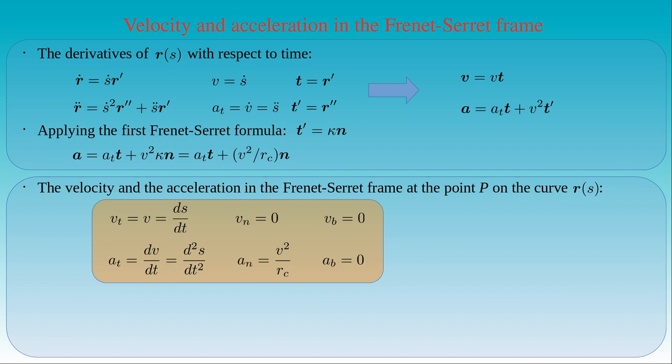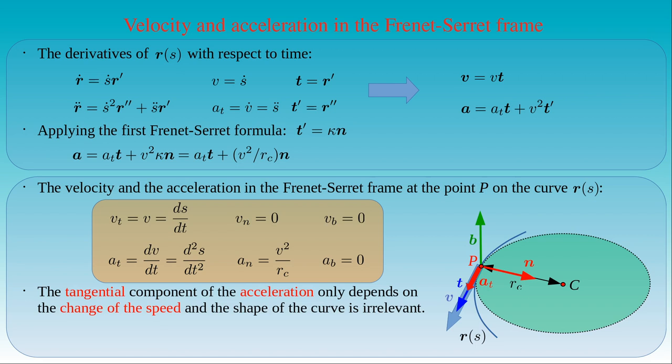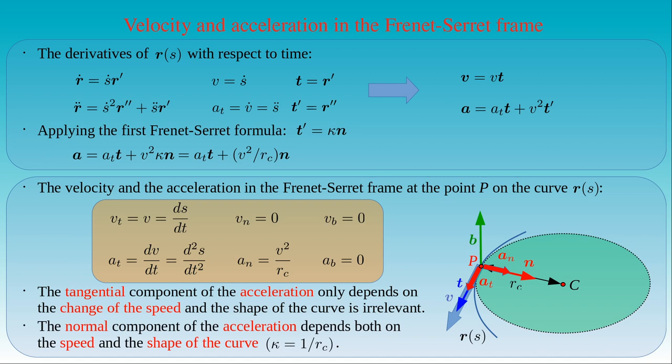In the figure we can see the curve r(s) with the Frenet-Serret frame at point P and the osculating circle with radius R_C. The velocity vector V points in the tangential direction of the curve at P. There is a tangential component of the acceleration that only depends on the change in speed, while the shape of the trajectory is irrelevant. However, the acceleration also has a normal component, which depends on both the speed of the body and the shape of the curve representing its path. This means that if a body moves along a curved path, its acceleration vector will not vanish even if the body moves with a constant speed.